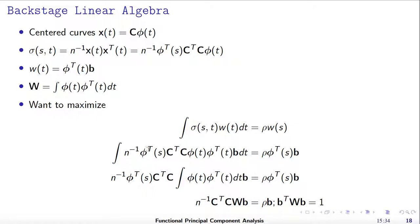This is a function of s, so we can pull it outside the integral. The constant matrix C transpose C can also be pulled outside the integral. Then the integral will just be the integral of phi of t times phi of t transpose dt, times b — and since b is constant it comes out too. So this integral becomes the matrix W.